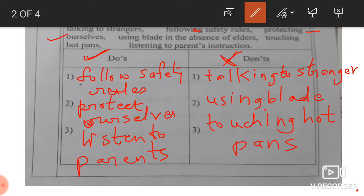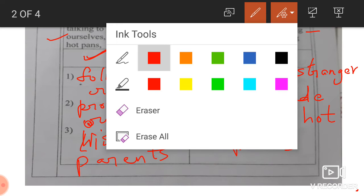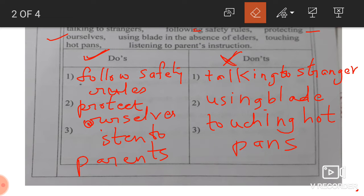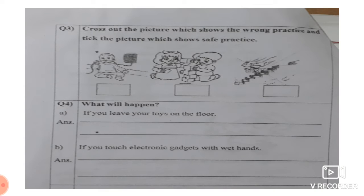So please remember. Follow safety rule, yes. Protect ourselves, yes. Listen to parents, yes. That is L-I, beta. It should be L-I. I'll write again. It should be L-I. Then talking to stranger, no. Using blade, no. Touching hot pans, no.